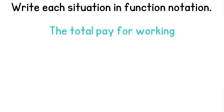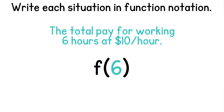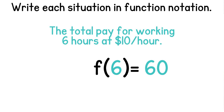Now we have the total pay for working six hours at ten dollars an hour. We'll take our function notation and since the input is six hours, we'll replace x with six. We don't know the output, but we do know that they get paid ten dollars for each hour. So if we work six hours, then our function would equal sixty dollars, since six times ten is sixty.